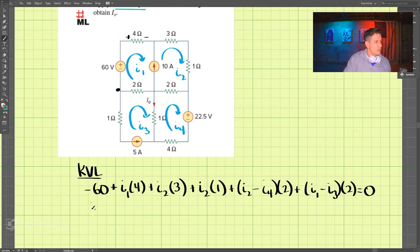Now let's do our next loop. This one has a current source, so let's do this one. We'll start here.